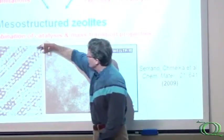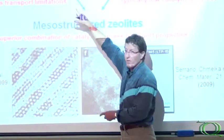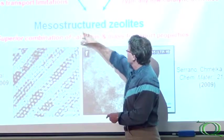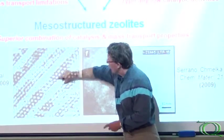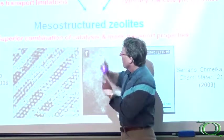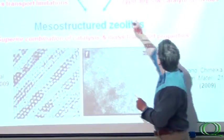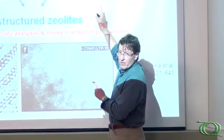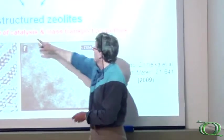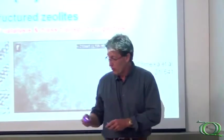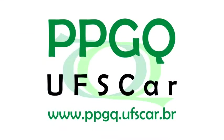These both have the attributes of a mesostructured zeolite - a zeolite because it has the crystalline identity in the framework, but mesostructured because it's templated along a surfactant. This provides both the high catalytic activity and the high mass transport.